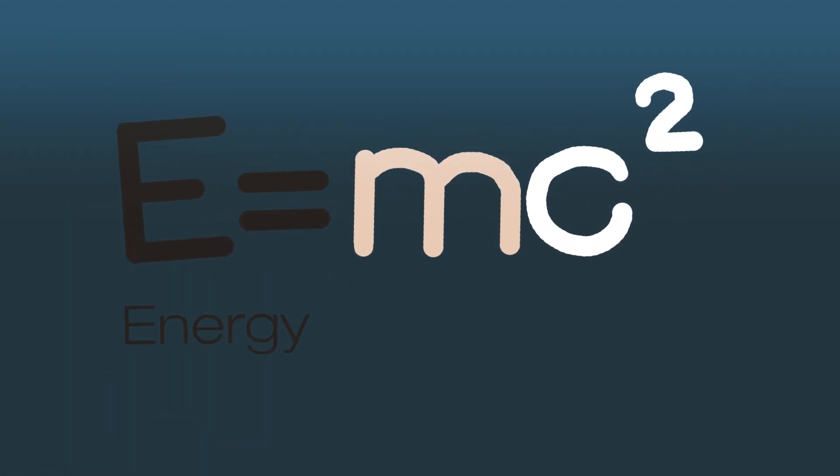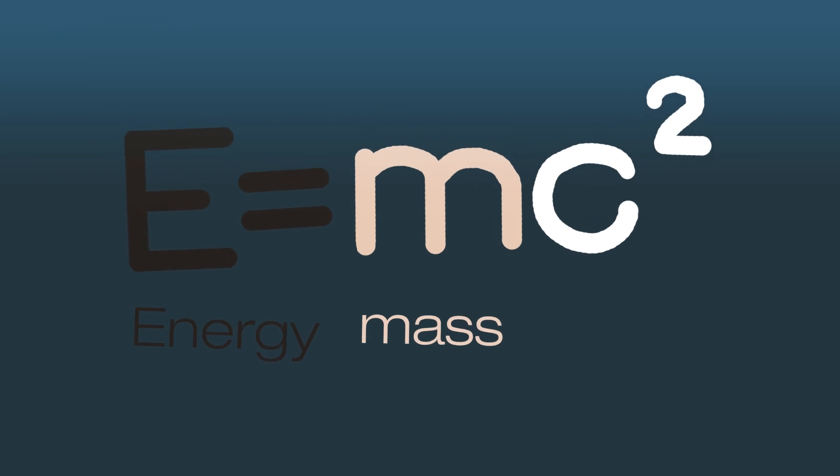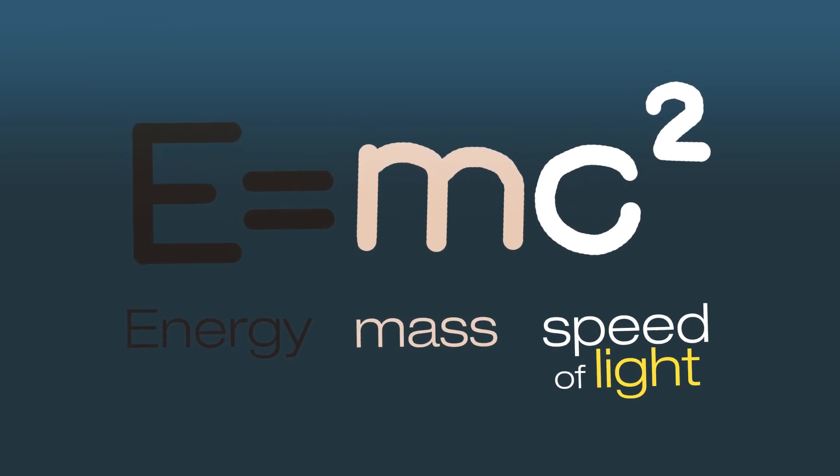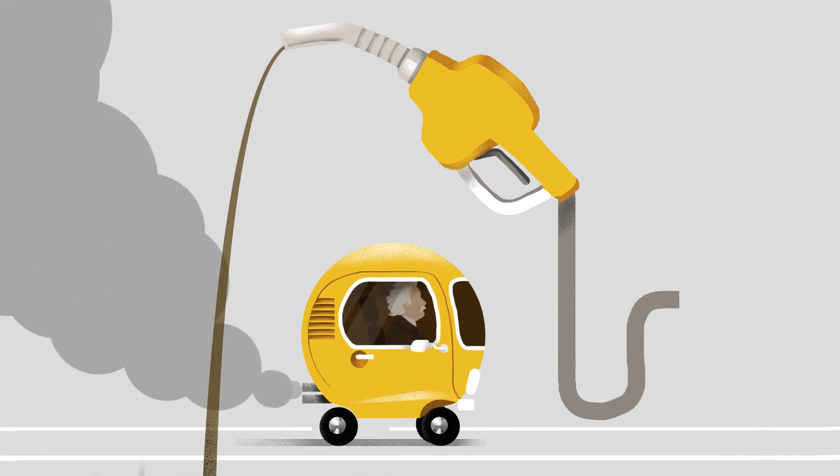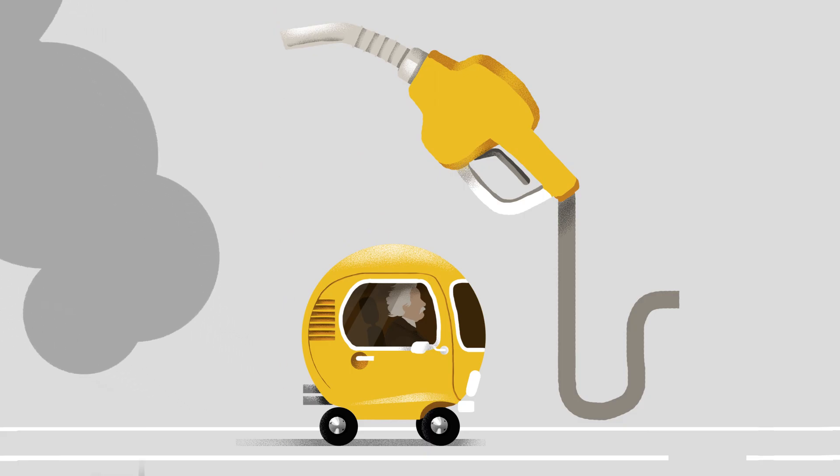Here, E is the energy released, M is the missing mass that has changed into energy, and C is the speed of light. The Sun does not have a limitless supply of fuel. It will eventually run out of hydrogen. But when?